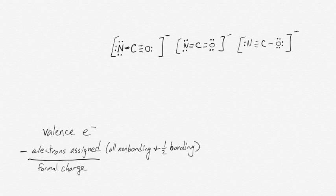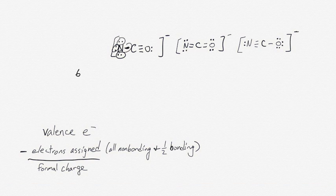For the example on the top left, we look at the number of electrons assigned to nitrogen. Nitrogen has three lone pairs, which means it has a total of six non-bonding electrons. It has one bond, which has two electrons. Half of the bonding electrons — half of two — is one. So nitrogen has seven electrons assigned to it.